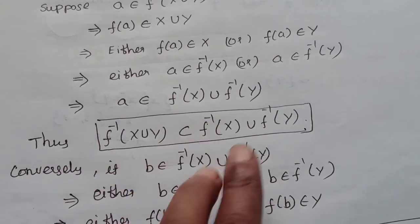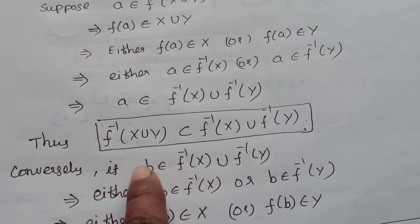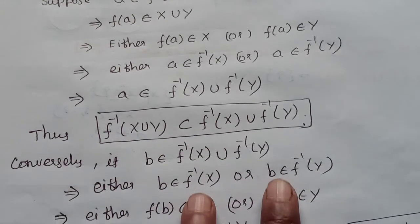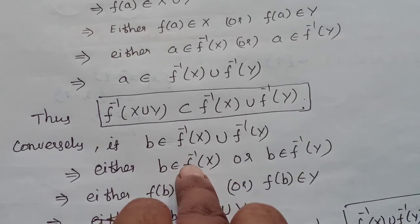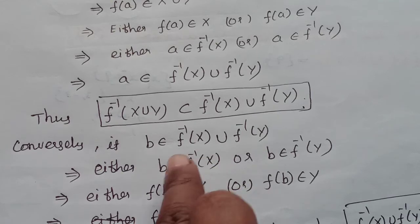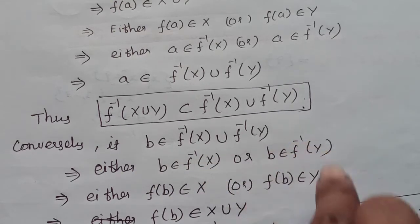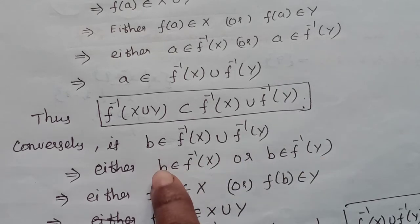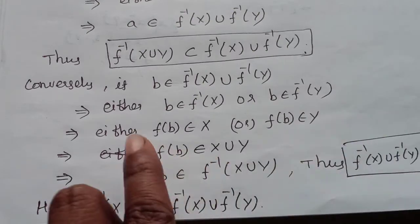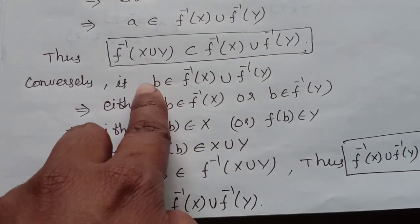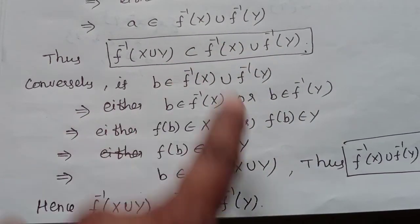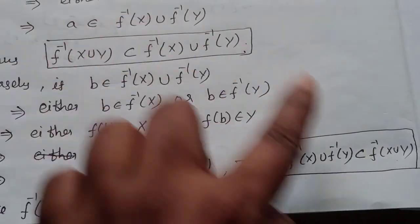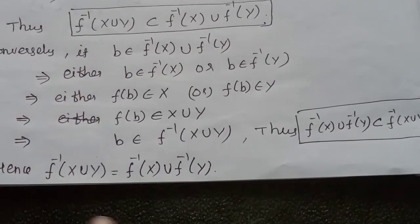Conversely, if b belongs to f inverse of X union f inverse of Y, then b belongs to either f inverse of X or b belongs to f inverse of Y. So b belongs to f inverse of Y, which means b belongs to f inverse of X union Y. Therefore, f inverse of X union f inverse of Y is contained in f inverse of X union Y.